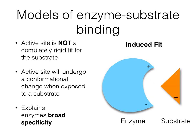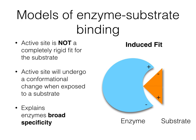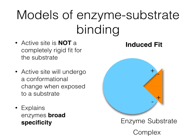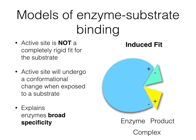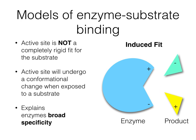The lock and key model has been modified, and the modification is called the induced fit theory. The active site is not a completely rigid fit for the substrate. However, when the substrate approaches the active site, the active site will undergo a conformational change when exposed to the substrate, allowing for a fit between the enzyme's active site and the substrate. This explains another important characteristic of an enzyme called broad specificity, which means an enzyme can act on a wide range of substrates as long as the substrates are structurally related to each other.